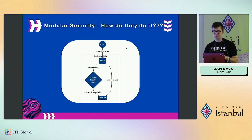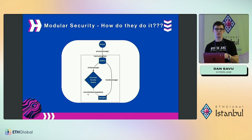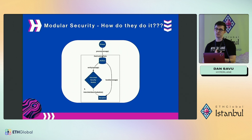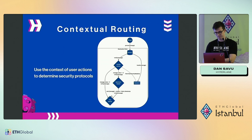The way this works is that once the relayer calls 'process' on the destination mailbox, the mailbox queries the recipient for the ISM it wants to use, feeds the message into that ISM, and if it passes security verification, the message is forwarded to the recipient.